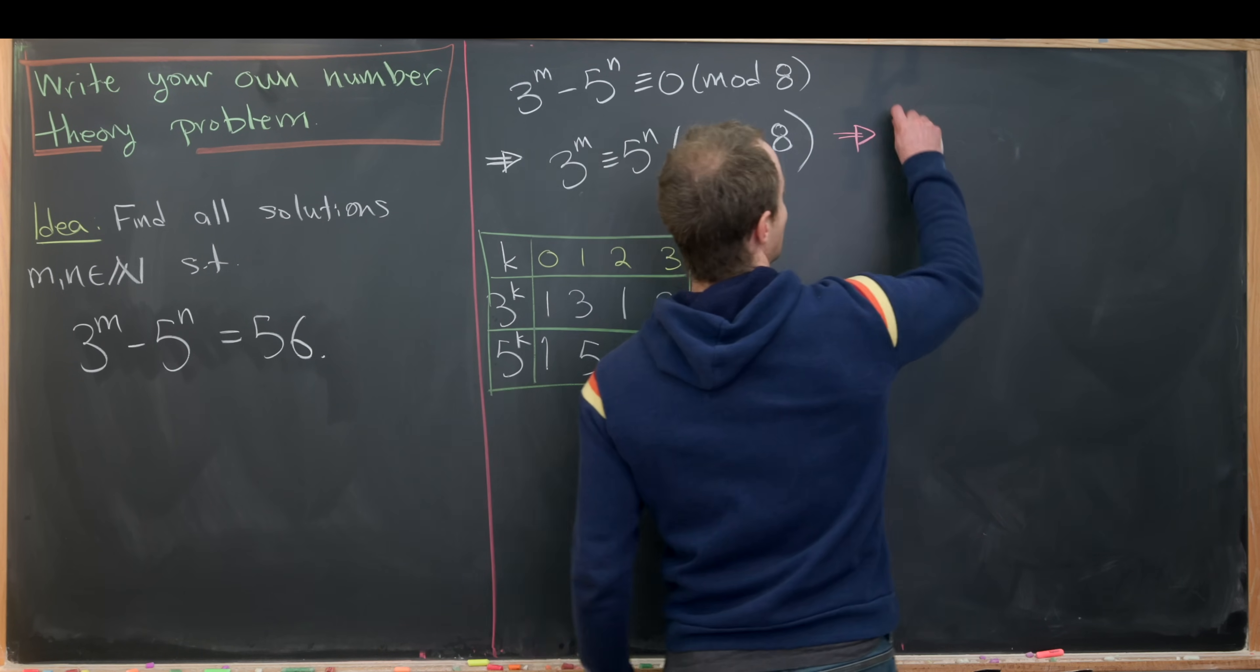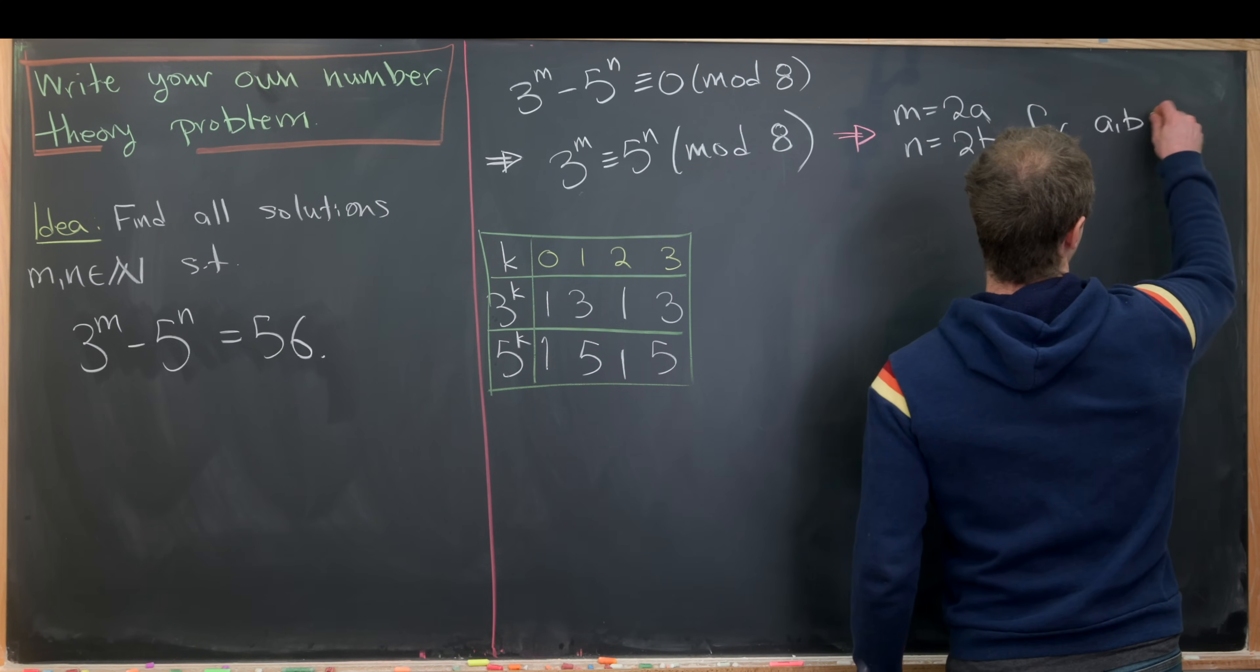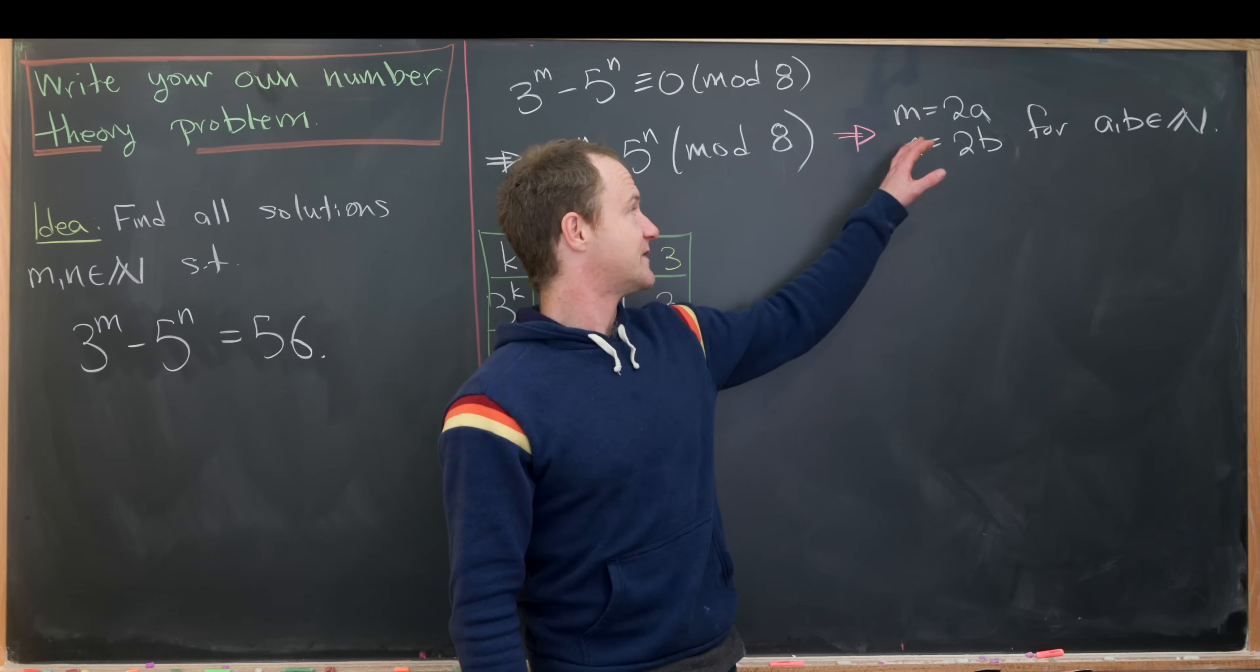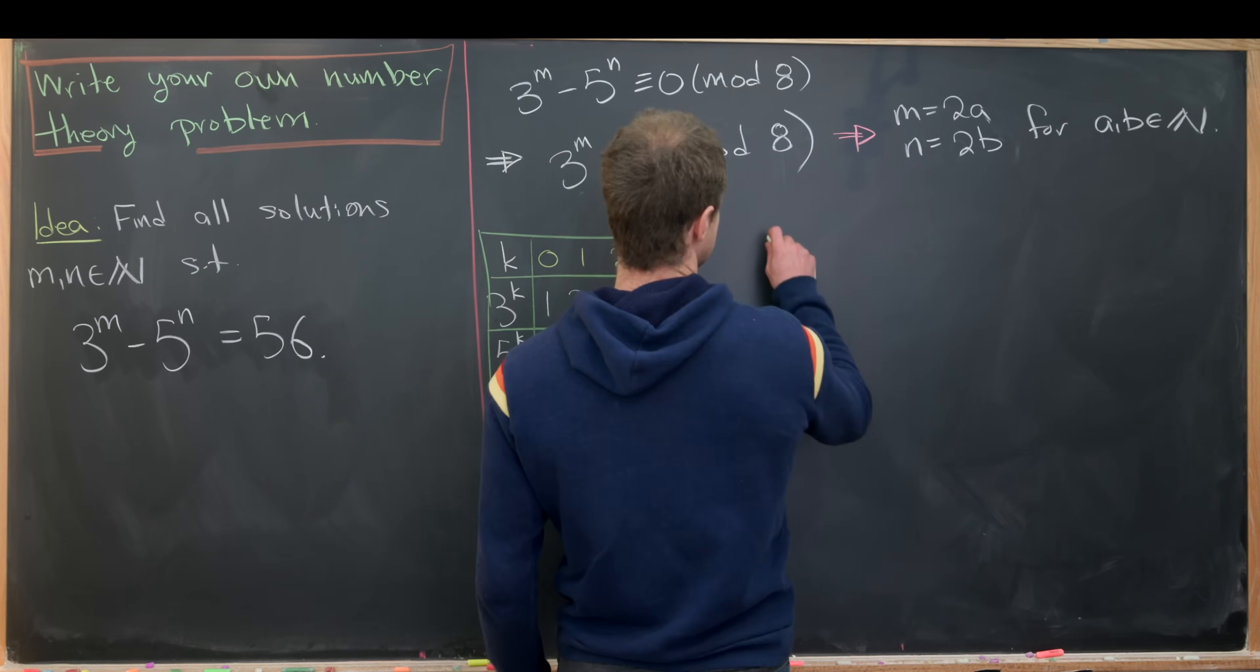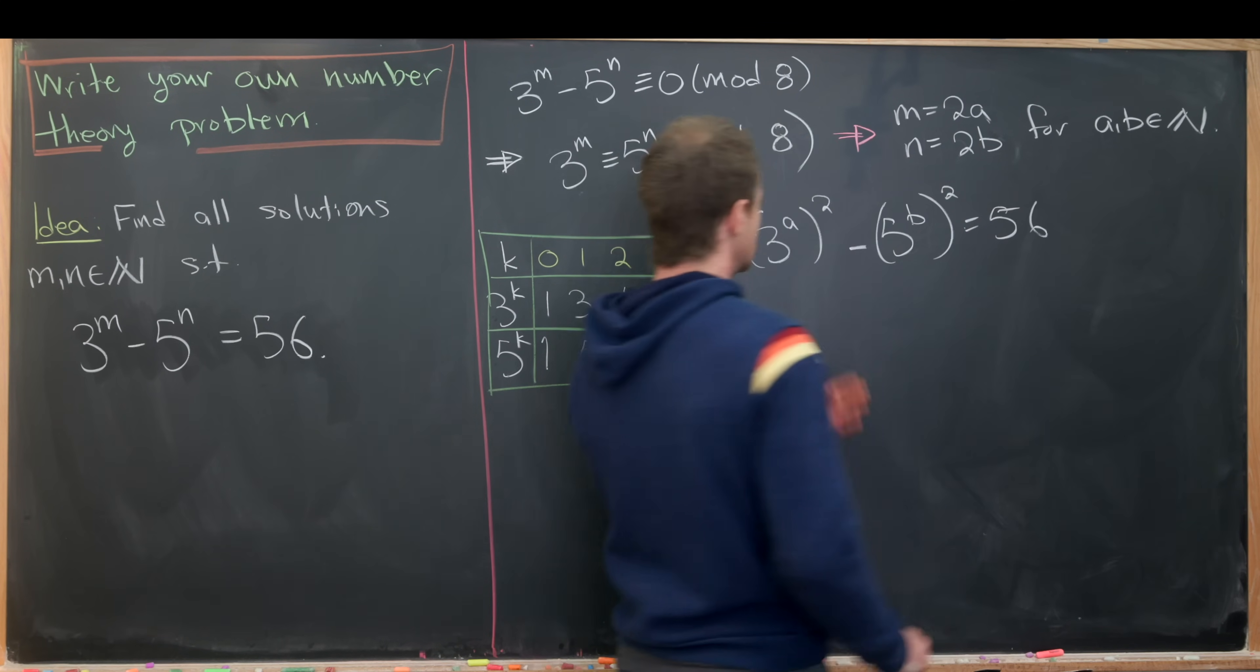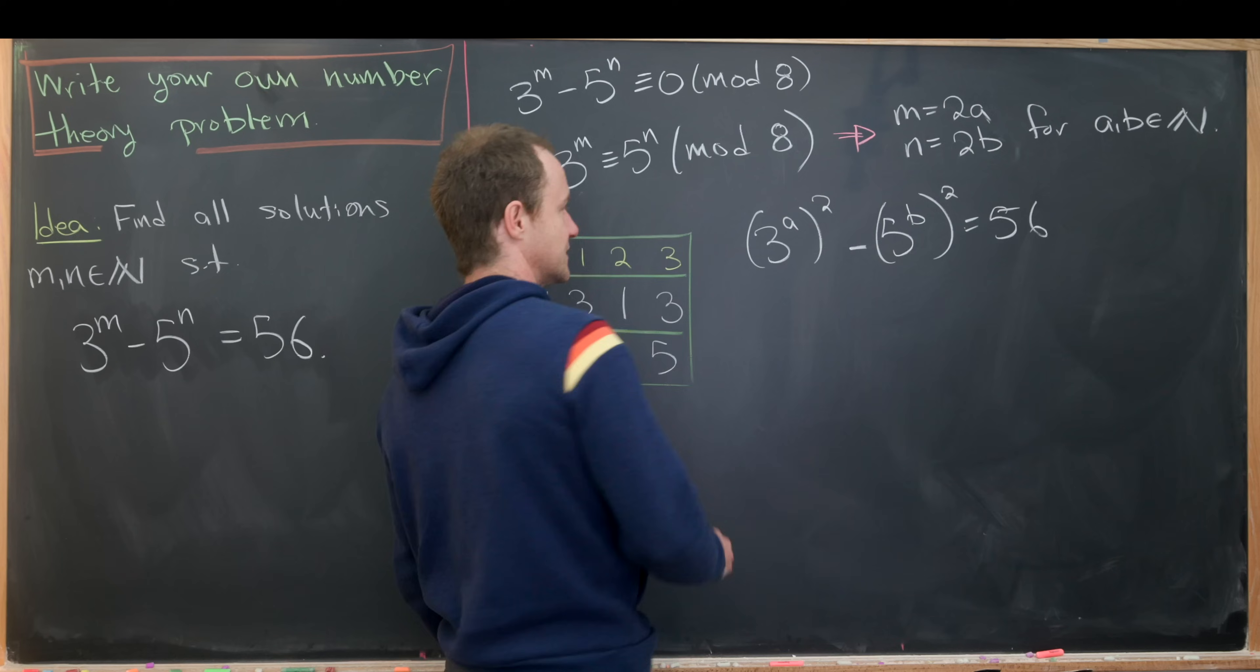So that tells us that m equals 2a and n equals 2b, for numbers a and b which are natural numbers. That's actually a lot more powerful than it might seem. Now we'll take this value of m and n and plug it into the original equation.